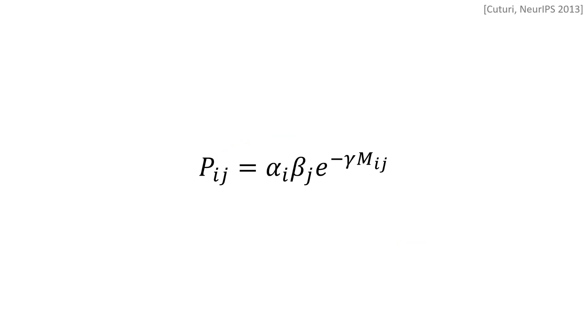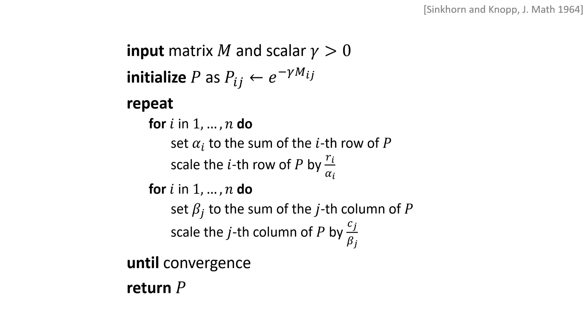It can be shown that the solution to the entropy regularized optimal transport problem takes the following form. Moreover, there is an efficient iterative algorithm for finding the solution. The Sinkhorn-Knop algorithm starts with a positive matrix and alternately rescales its rows and columns until convergence. Here we show the complete algorithm for finding P.